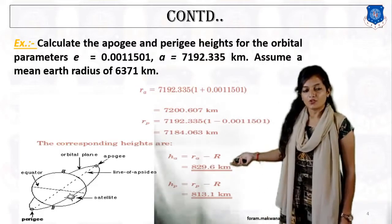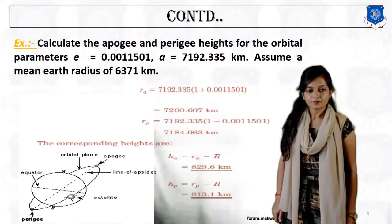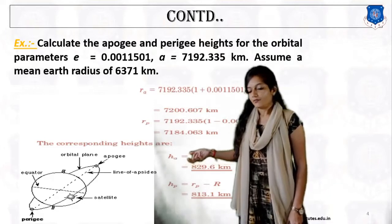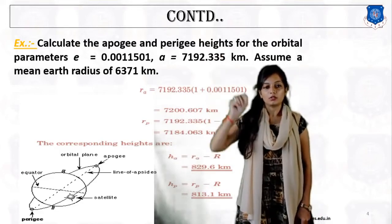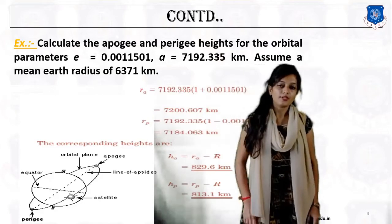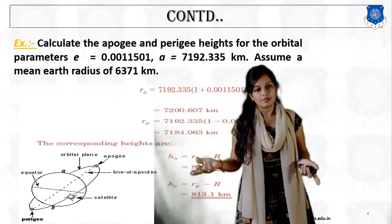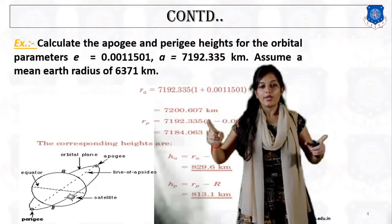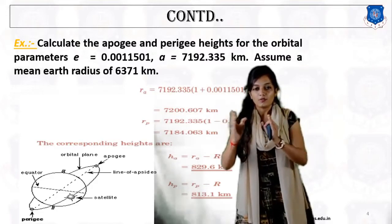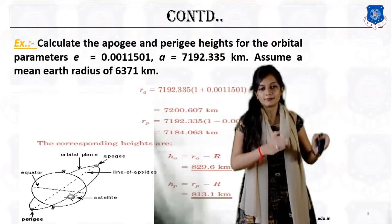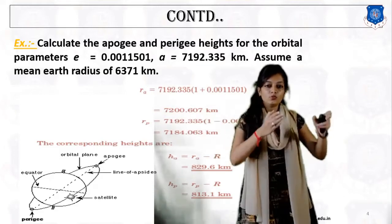The height of apogee is calculated as the radius of apogee minus the radius of the earth. With the help of this diagram, we can see that from the surface of the earth to the perigee or apogee point is called the height, and from the center of the earth we calculate the radius. So the total distance — the radius of apogee — minus the radius of the earth gives the height of apogee.